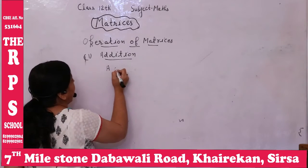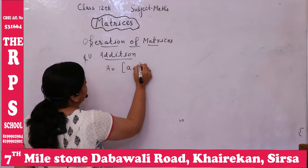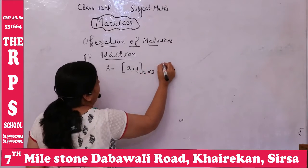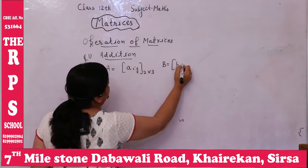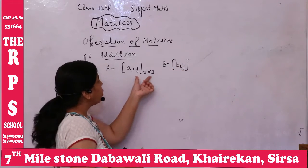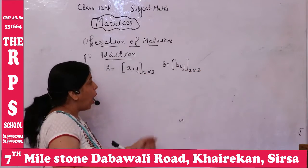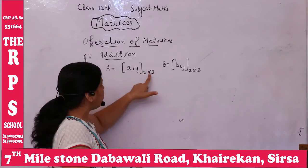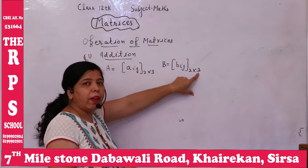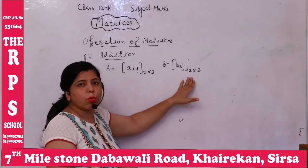If A is a matrix with elements A[i][j], its order is 2×3. And the other matrix B with elements B[i][j] — if this is also 2×3, meaning 2 rows and 3 columns, and the order is the same, then we can add those matrices.